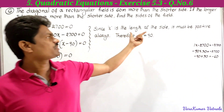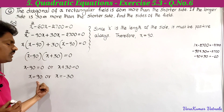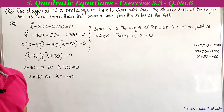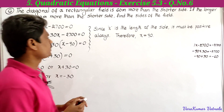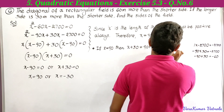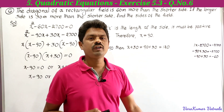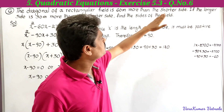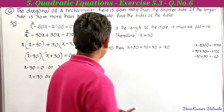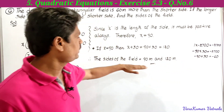Since x is the length of the shorter side, it must always be positive. Therefore we take x = 90. Then the longer side is x + 30 = 90 + 30 = 120. Therefore the sides of the field are 90 meters and 120 meters.